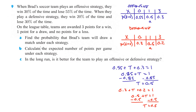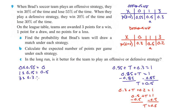For part B, calculate the expected number of points per game under each strategy. For the offensive strategy: 0 times 0.55 is 0, plus 1 times 0.15 is 0.15, plus 3 times 0.3 is 0.9. Adding those all up gives 1.05 expected points under the offensive strategy.